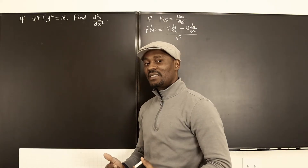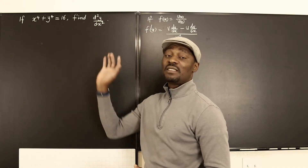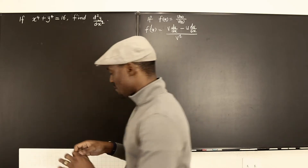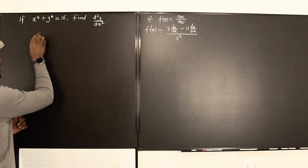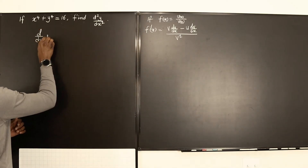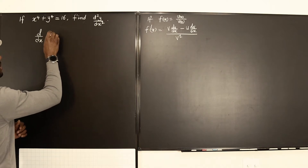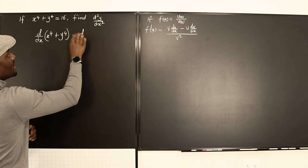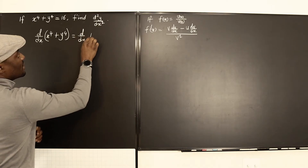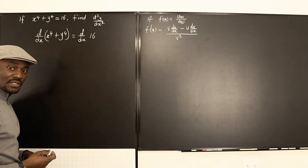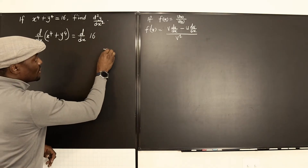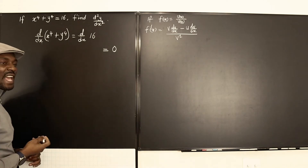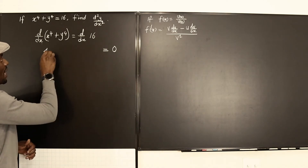Using implicit differentiation does not require anything to be moved, so we're just going to differentiate where it is. We're going to say that d/dx of x to the fourth plus y to the fourth equals d/dx of 16. We know that d/dx of 16 is going to be 0, so we can just write that on this side.